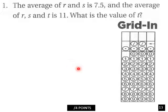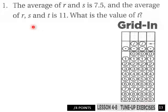We start into our grid-ins now, page 13. Average of r and s is 7.5, and average of r, s, and t is 11. What is the value of t? So there you go.